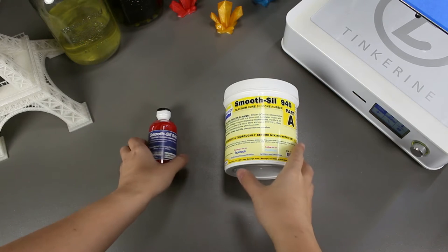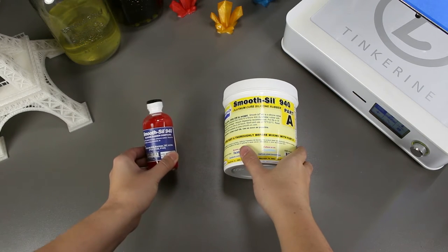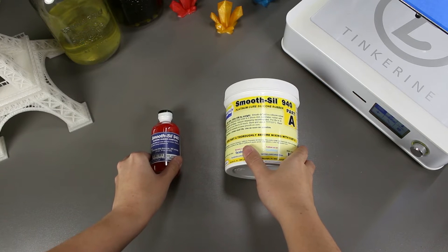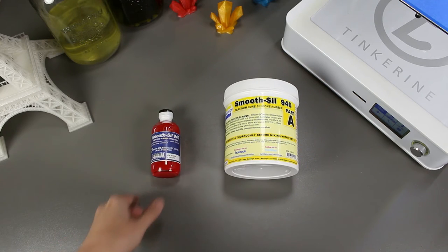Welcome to another episode of Tinkering Experiments. Today we are going to make a mold with PLA. We will be using the Smooth Sil 940 to create our silicone mold.